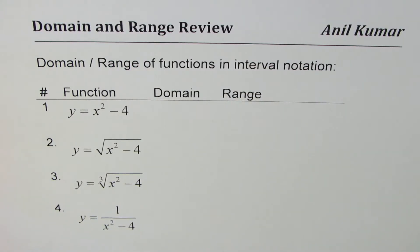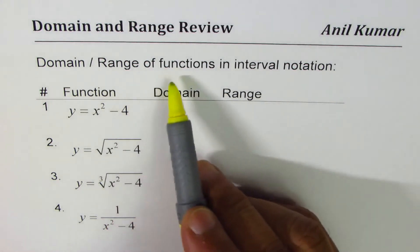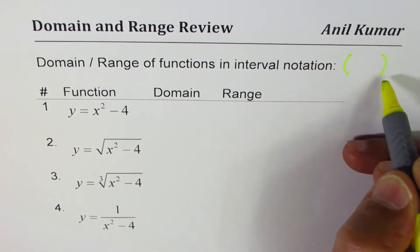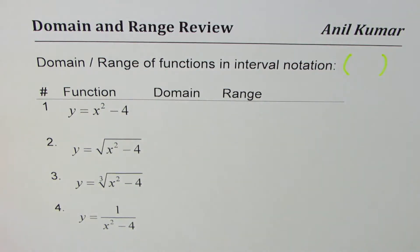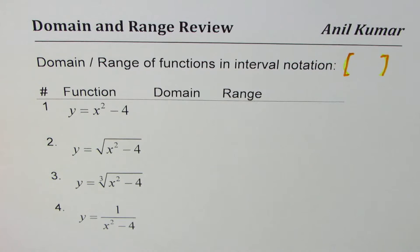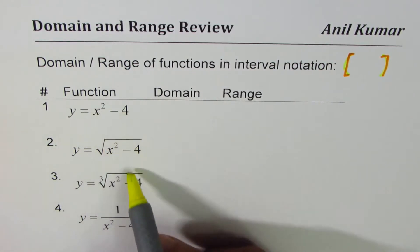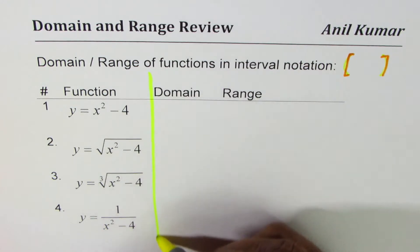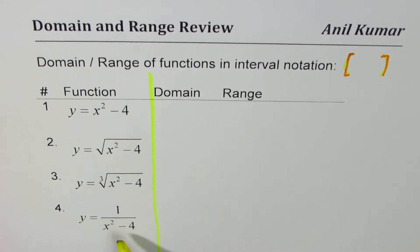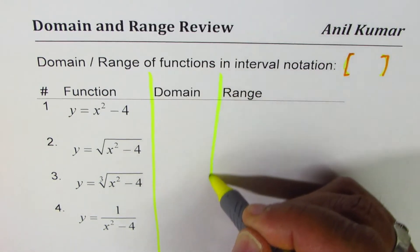I'm Anil Kumar and in this video we will review concepts of domain and range, and write domain and range of functions in interval notation. Interval notation uses open or closed brackets depending on the situation. We'll start with the function y = x² - 4, then modify it to make the square root, cube root, and reciprocal of this function, and write the domain and range for each.